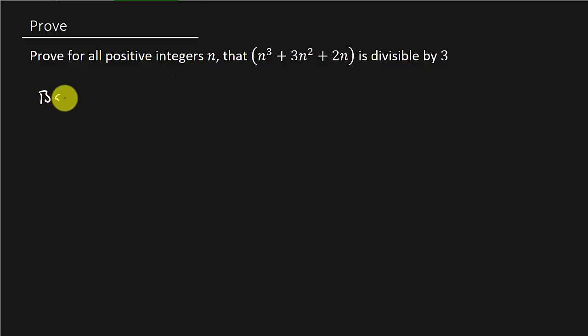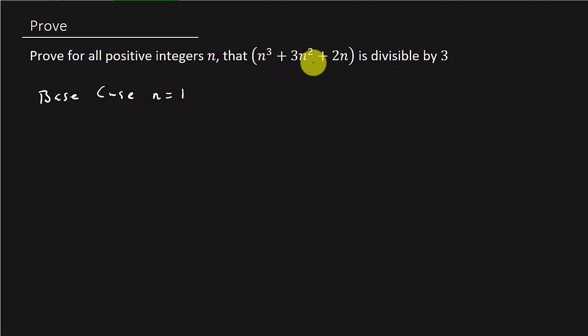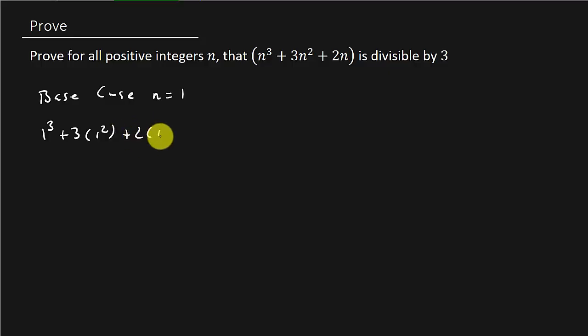So we want to start out with the base case, n equals 1. We need to plug 1 in for n. So that's going to be 1 cubed plus 3 times 1 squared plus 2 times 1. And that is 1 plus 3 plus 2, which is 6. And 6 is divisible by 3.